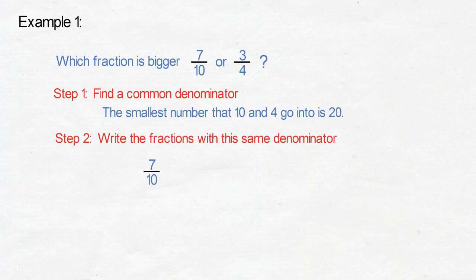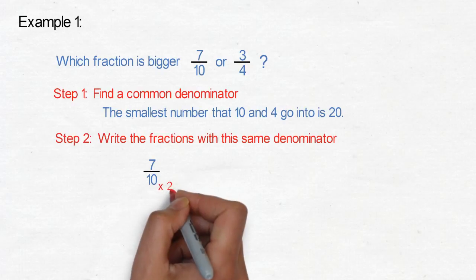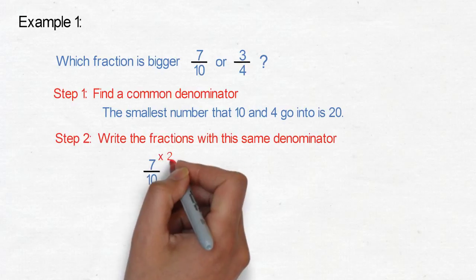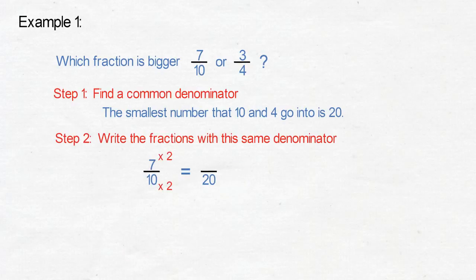For 7 tenths, we multiply the denominator by 2 to make it 20, and we multiply the numerator by 2, which gives us 14 over 20. For 3 quarters, we multiply 4 by 5 to make it 20, and we multiply 3 by 5, which gives us 15 over 20.